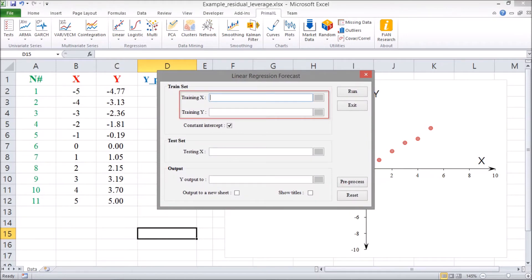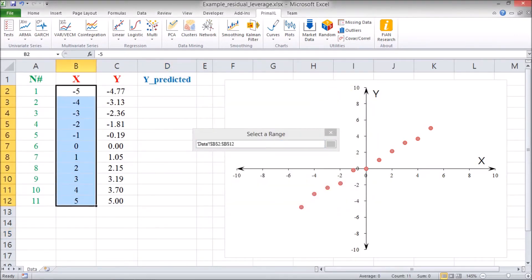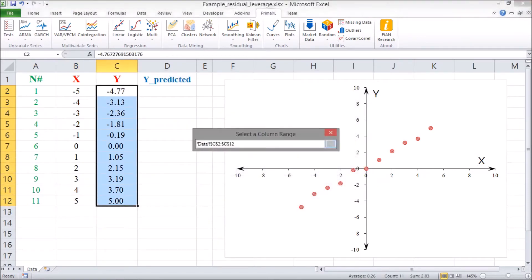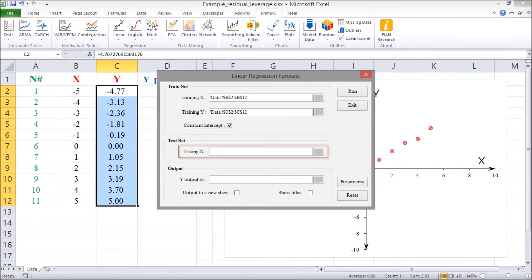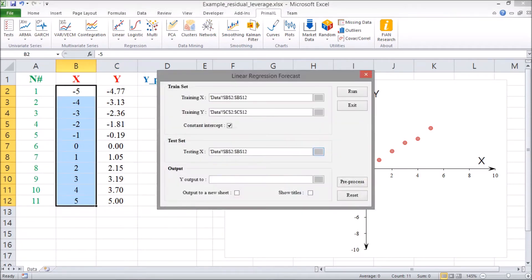For the training data, we select the cell ranges for x and y. For the testing data, we select the same x range as for the training. Now, we specify the output location.